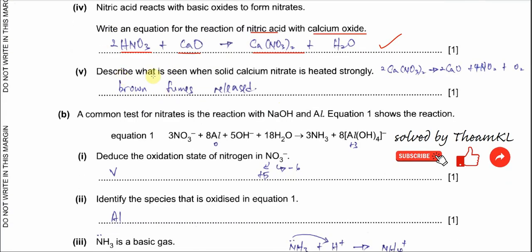Part 5: Describe what is seen when solid calcium nitrate is heated strongly. When group 2 nitrate decomposes, it forms three compounds: the group 2 oxide, NO2, and O2. Oxygen cannot be seen — it is colorless. Calcium oxide is a white solid, similar in appearance to calcium nitrate. What you can see is brown NO2 gas — brown fumes are released when calcium nitrate is heated.